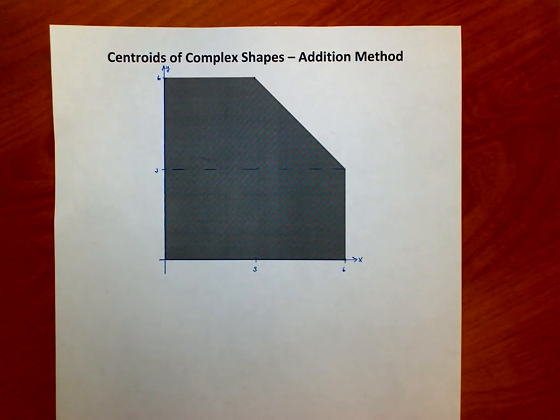Hi guys, let's talk about how to find the centroid of a complex shape. By complex we don't mean difficult or ridiculously tough to figure out, we're really just saying complex means it's more than one shape put together. We're going to discover two ways that we can do it. This first video is going to be the addition method. In the next video I'll show you the subtractive method.